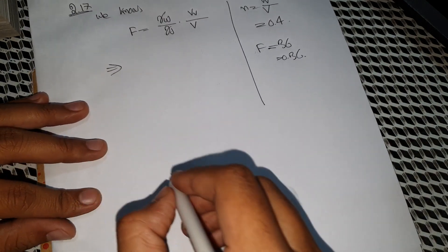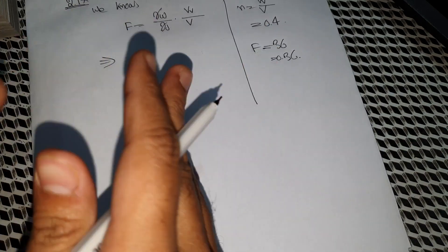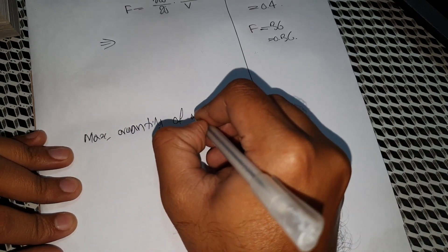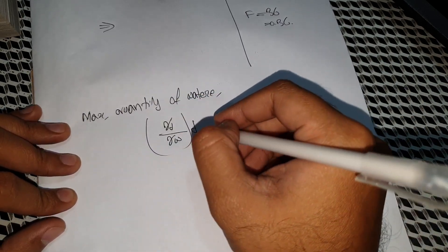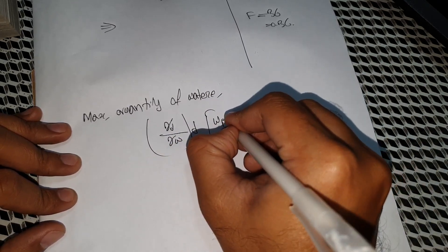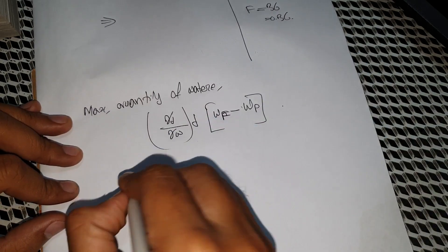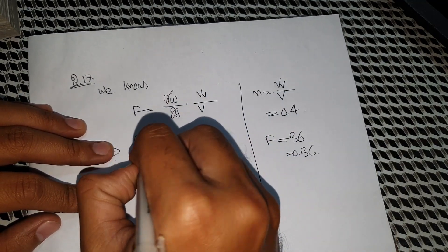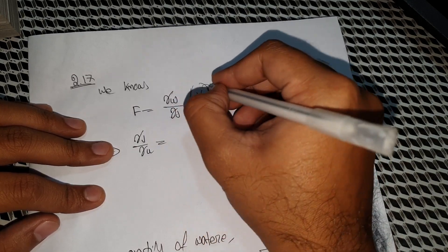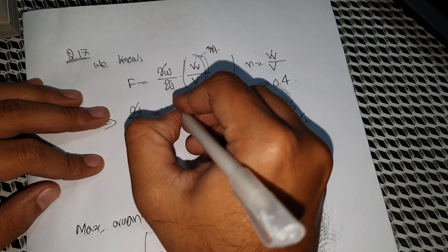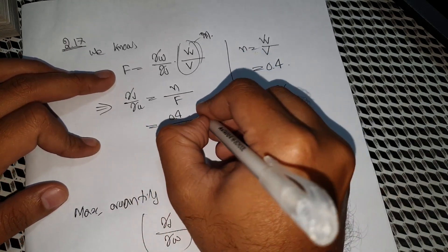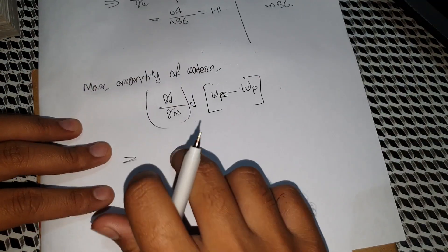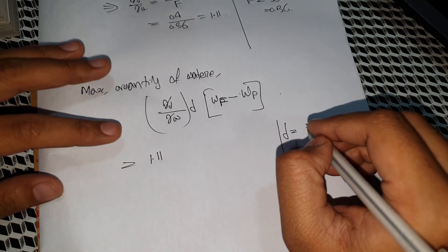The maximum quantity of water stored between wilting point and field capacity. The maximum quantity of water is given by the equation: gamma d divided by gamma w, into d — the effective depth of root zone — into the difference between field capacity and wilting point. Values: 1.1, and depth 60 cm.